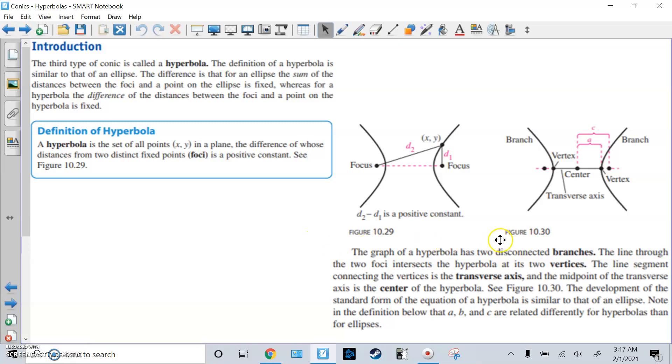The graph has two disconnected branches, so here's a horizontal one. They don't have a vertical one on here, but there is a vertical one as well. The line through the two foci intersects the hyperbola at its two vertices. So this focus is what we connect to this little dotted line. It crosses here and here at each vertex.